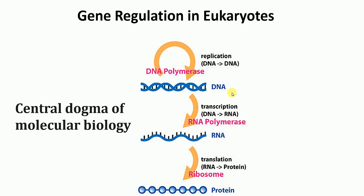So to summarize: DNA makes DNA — that is replication. DNA makes RNA — this is transcription. DNA makes RNA makes protein — that is translation. This whole process is called the Central Dogma of Molecular Biology. Genetic information is transferred from DNA to RNA and finally in the form of protein.